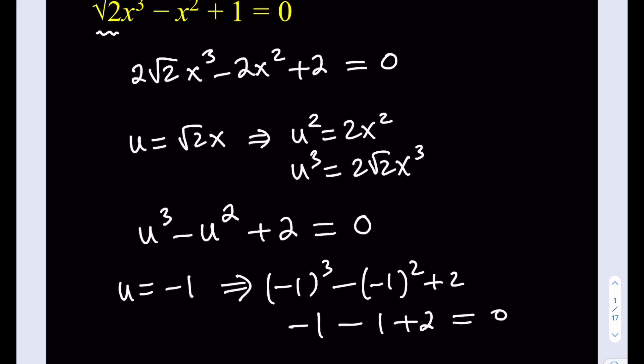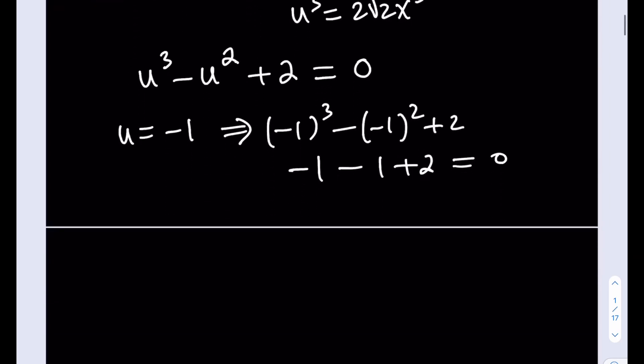Once we know that, what can we do? Well, we can just go ahead and rearrange this cubic in a nicer way. Let's go ahead and do that. Knowing that u equals negative 1 is going to be a solution, I can just go ahead and split the 2. That's actually where that comes from. Like this. Instead of the 2, I can just write 1 plus 1, right?